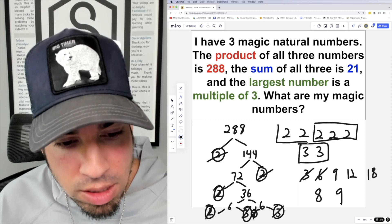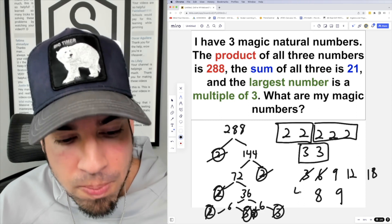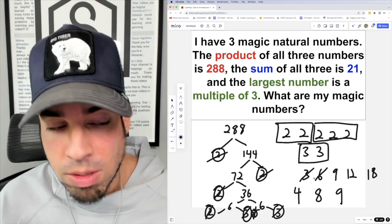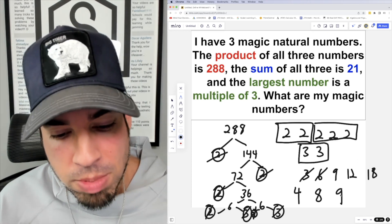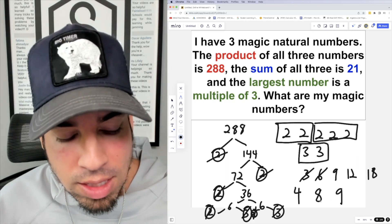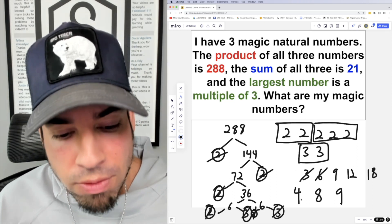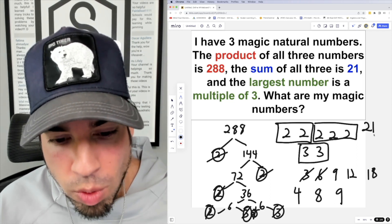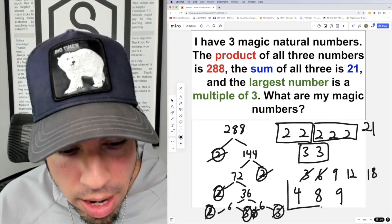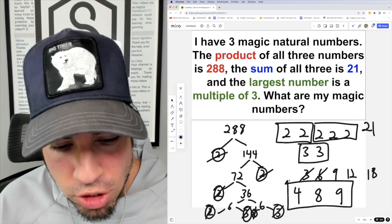Now we already know that these are going to multiply to 288, but just to be safe: 9 times 8, that's 72. 4 times 72 is 288. And guess what? 4 plus 8 is 12, plus 9 is indeed 21. So 4, 8, 9 are the magic numbers. Done!